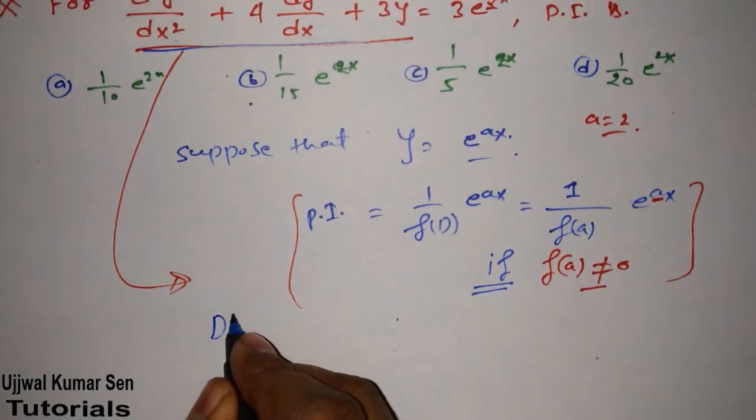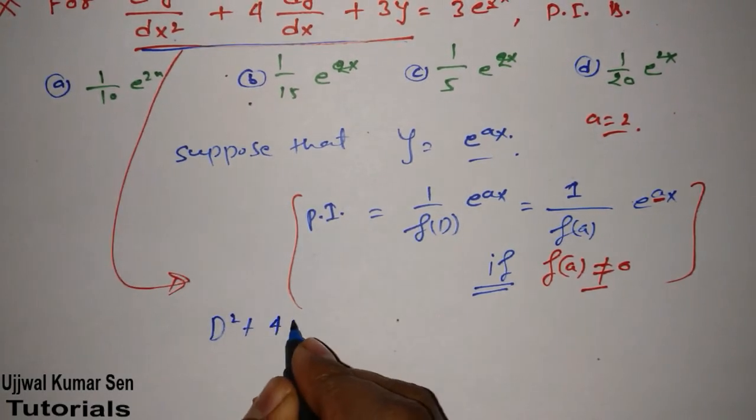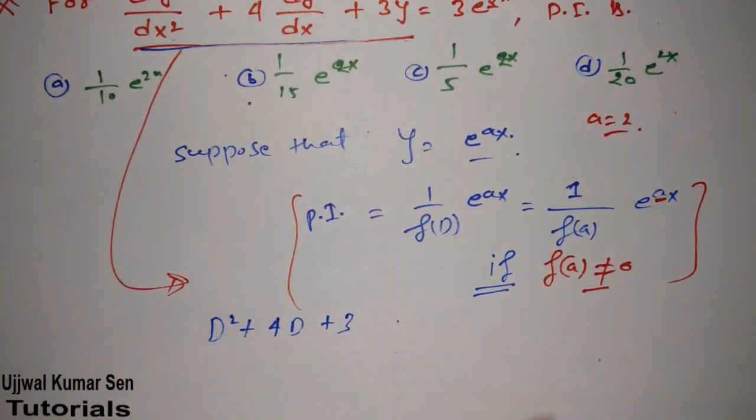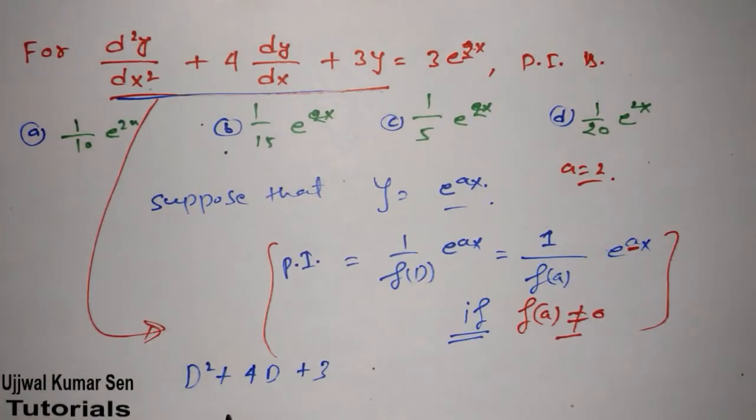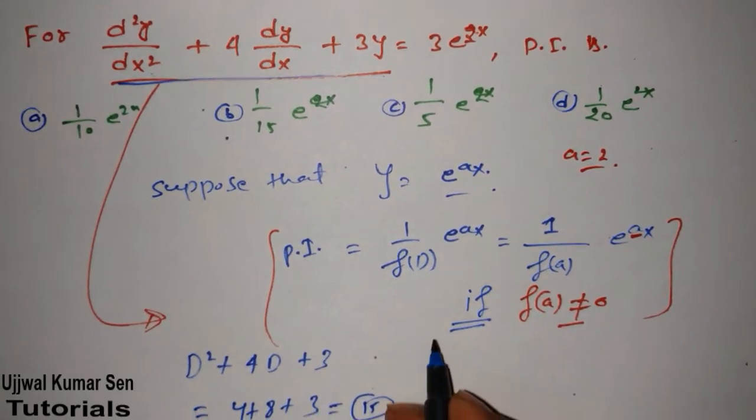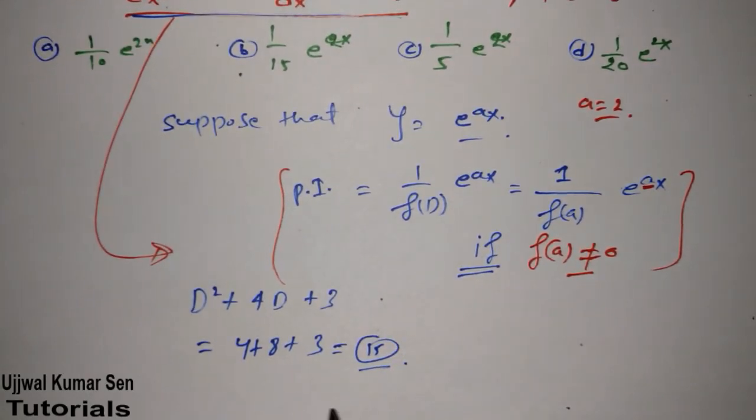Let me write this equation in auxiliary form, auxiliary equation we can say. So what is it? D square plus 4D plus 3. If I will put a is equal to 2 here, then what values we will get? 4, 8, 3 is equal to 15.